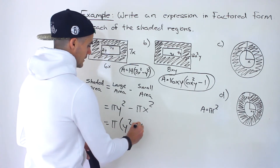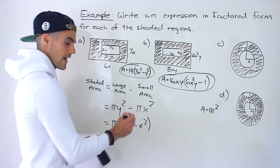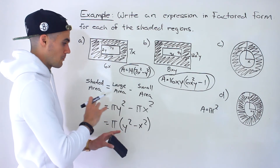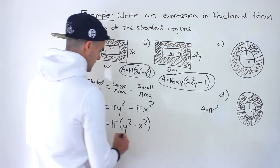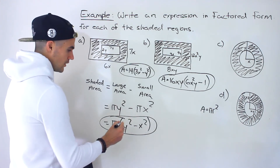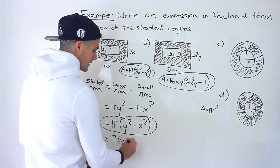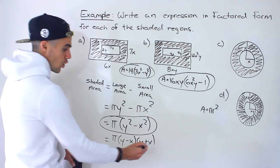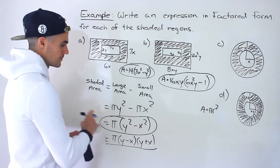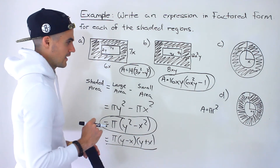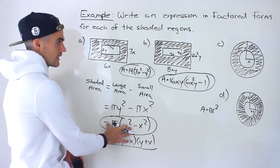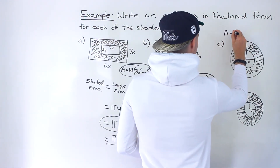Factoring πy² − πx²: we can take out π, but we can't take out x or y since neither appears in both terms. This gives π(y² − x²). Now, this is actually a difference of squares, which we'll cover in a future section. It factors further into π(y − x)(y + x), but since we haven't covered that yet, π(y² − x²) is the final answer for this section.